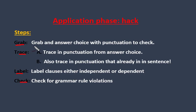Let's review what that means. Grab — grab an answer choice. The answer choice you're going to grab is one that's got punctuation for you to check. Then what we're going to do is take that answer choice and trace in where the punctuation is. Also, you're going to look at the complete sentence — remember, when you correct the sentence you've got to read the whole sentence. So if there's a comma in the non-underlined portion, you've got to look at that.